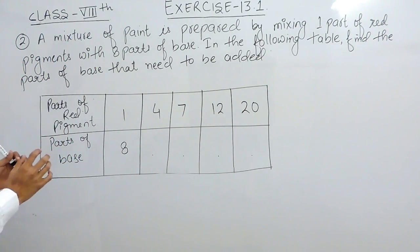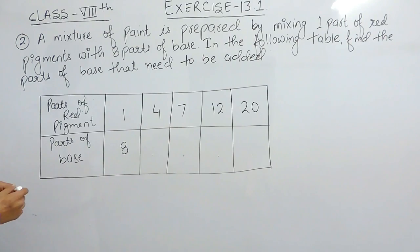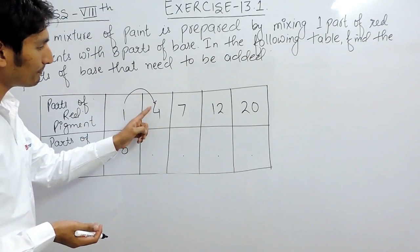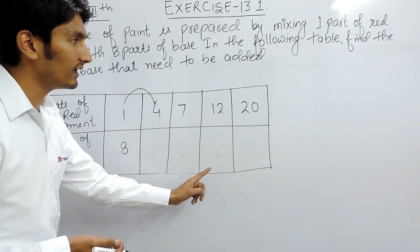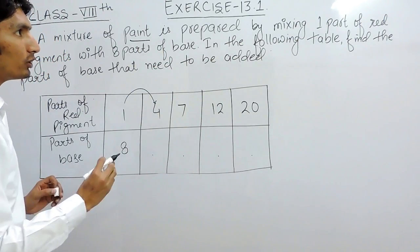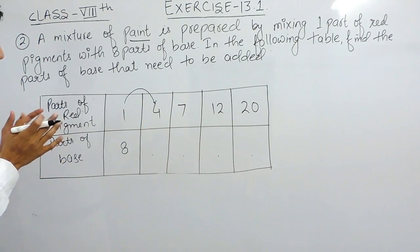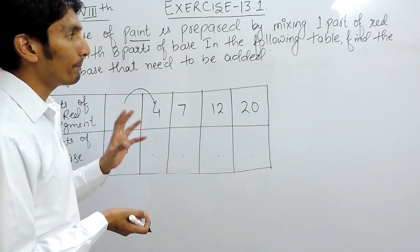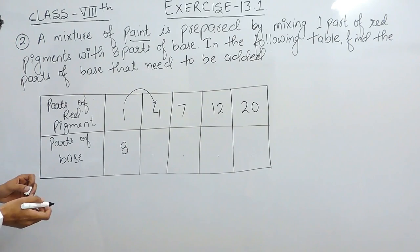First of all it is important to understand that this is a case of direct proportion, because the number of times — or you can say the proportion — in which this red pigment is increasing, in that same proportion this base must also increase. Otherwise the paint you are forming by mixing these two won't be as good. To make that paint good you have to add these two in the same proportion — that is, you have to increase both terms in direct proportion.